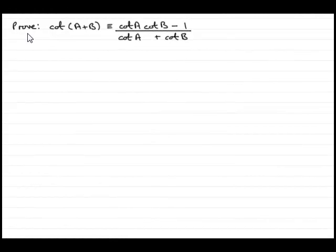In this example, what we've got to do is prove that the cotangent, or cot, of A plus B is identical to cot A cot B minus 1, all divided by cot A plus cot B. To do this, we'll just put down proof.